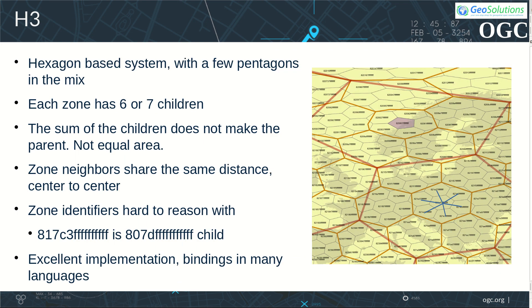H3 by Uber is based mostly on hexagons, each one having seven children. Occasionally, a pentagon is found too, which has six children. The system is designed for efficient navigation, with each cell having six neighbors at the same distance. However, zones are not exactly equal in area. Zone identifiers are hexadecimal representations of a 64-bit number and are hard to reason with. H3 has a range of library implementations covering a rich set of languages, including C, JavaScript, Java, Python, and more.